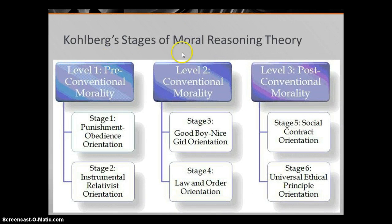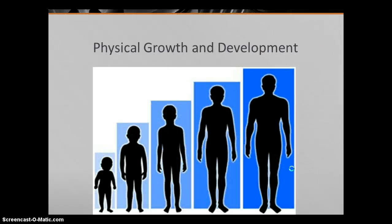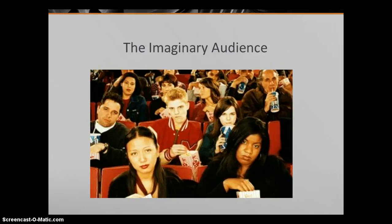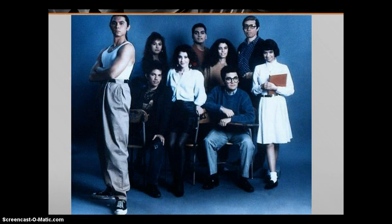Looking at Kohlberg's stages of moral reasoning, these students are at stage six, where they question authority and everything is relative. Physically, they are definitely adults, but psychologically they still believe in the imaginary audience and the personal fable, as you can see in this picture.